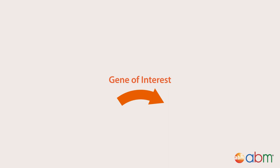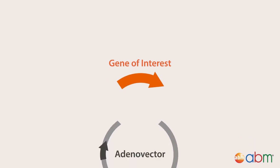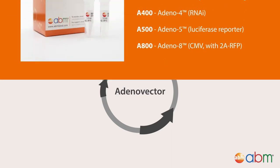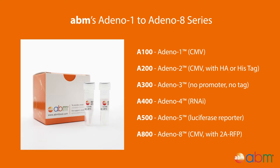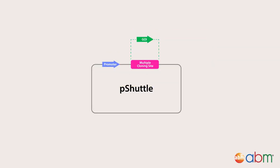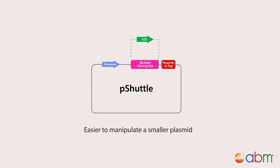First, you'll need to clone your gene of interest into an adenovirus expression system vector. There are many commercial cloning kits that can help you speed up this cloning process, including adenovirus cloning kits that come with various tags and reporters. Using these kits, you can clone your gene of interest into the provided shuttle vector at the multiple cloning site in frame with your desired tag or reporter at the C-terminus. The shuttle vector is utilized because it is easier to manipulate a smaller plasmid.